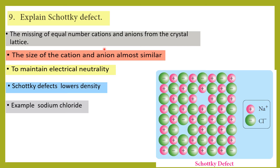Question: explain the Schottky defect. Schottky defect involves the removal of equal numbers of cations and anions from the crystal lattice. For example, in NaCl, one Na⁺ and one Cl⁻ are removed. The size of the cation and anion must be almost similar. Electrical neutrality is maintained because equal numbers of cations and anions are missing. Schottky defect leads to lower density. Example: sodium chloride.